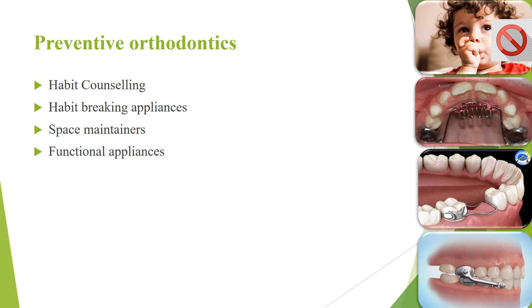Preventive orthodontics includes habit counselling, habit breaking appliances, space maintainers, and functional appliances. For example, if a child is thumb-sucking, we counsel the parents and child; if counselling fails, we use habit breaking appliances. Space maintainers prevent malocclusion when deciduous teeth shed early. Functional appliances are used during the growth period when jaw disproportion exists — such as the maxilla growing shorter than the mandible.